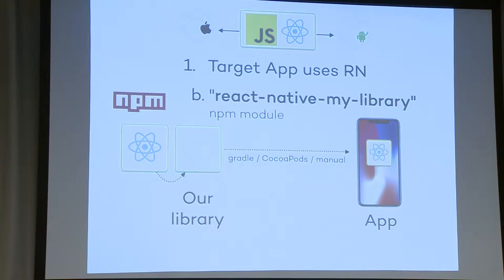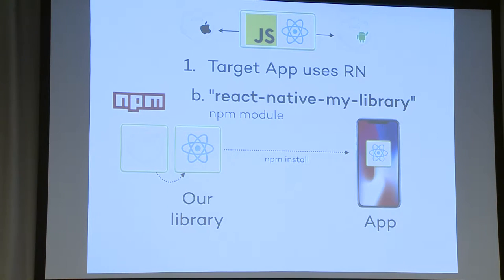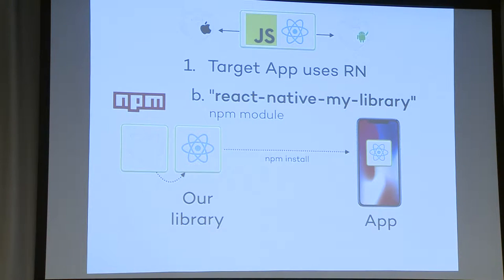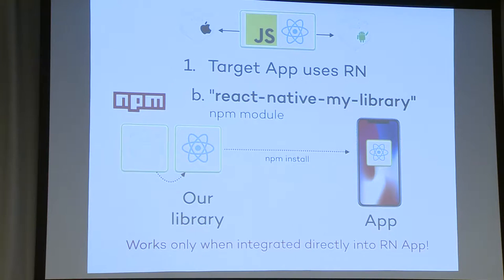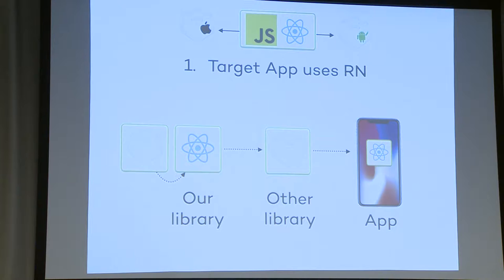We simply reverse it and say NPM install instead of Gradle dependencies. But this works only when integrated directly into a React Native app. Our setup has another library in between — our framework is integrated into another library which doesn't care about React Native, and then it gets integrated into the React Native app. That's the problem. Let's try to hack it — what if we can package React Native into the library itself, making it a statically compiled binary in your framework, the version you need?